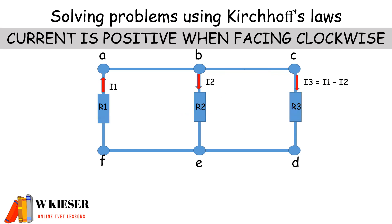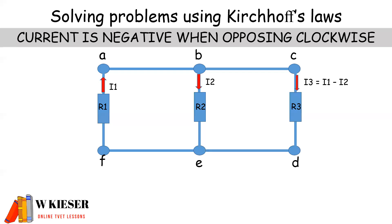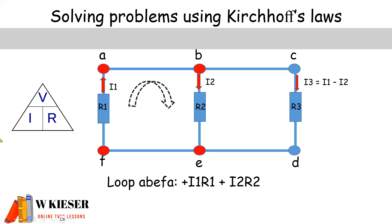Now current is also positive when facing in a clockwise direction, and current is also negative when opposing the clockwise direction. We use Ohm's Law as an example — current is directly proportional to voltage and inversely proportional to resistance. So therefore, the potential difference is going to be current multiplied by resistance.